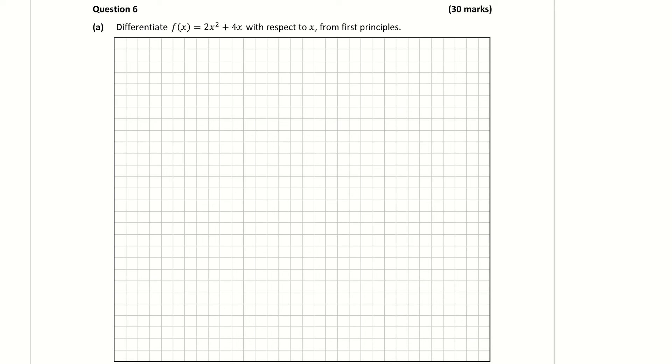Question 6a. Differentiate f of x with respect to x from first principles. So when we're using first principles, we're looking at the limit as h approaches 0. And I go f of x plus h minus f of x, and I divide that all by h. So that's how we find our first principles, differentiating from first principles.